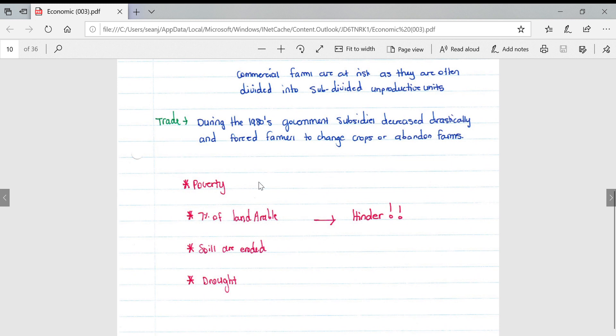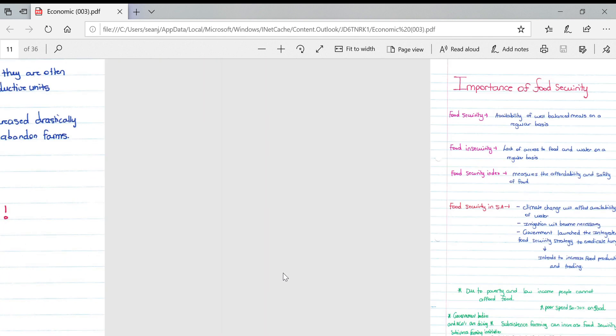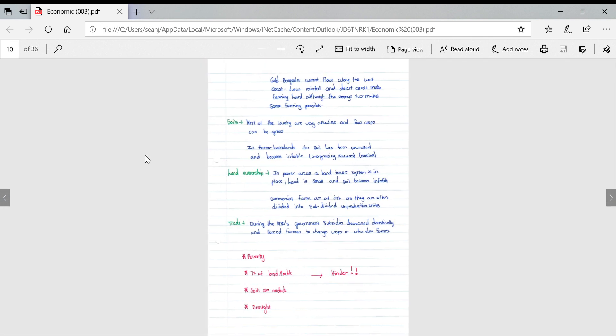Listing other factors: poverty, seven percent of our land is arable which is a very small percentage, soils are easily eroded, and we constantly experience droughts in a lot of the country. That concludes the video on an introduction to economic geography as well as focusing on agriculture.